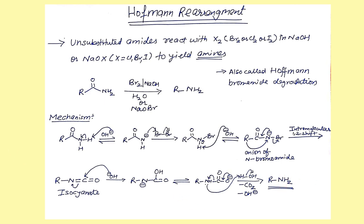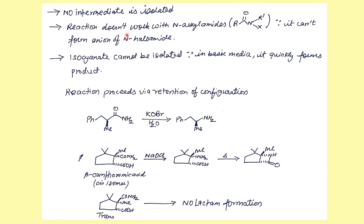Key features of the Hofmann rearrangement: First, the isocyanate intermediate cannot be isolated because the reaction is run in basic media — OH attacks the isocyanate immediately. Second, the reaction does not work if there are substituents on the nitrogen. Third, the reaction proceeds with retention of configuration. For example, treating a chiral amide with potassium hypobromide gives the amine with retention of configuration.